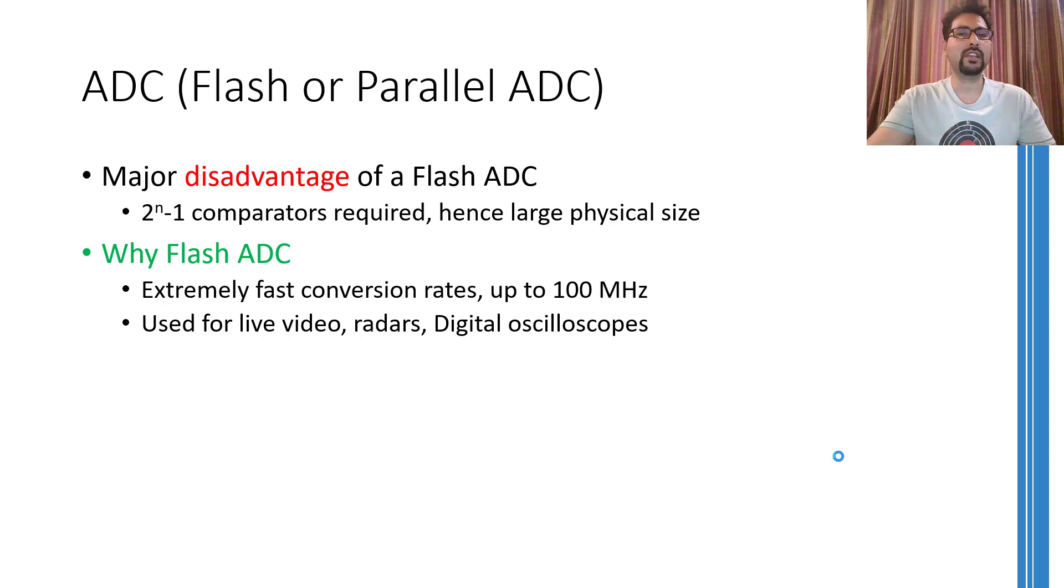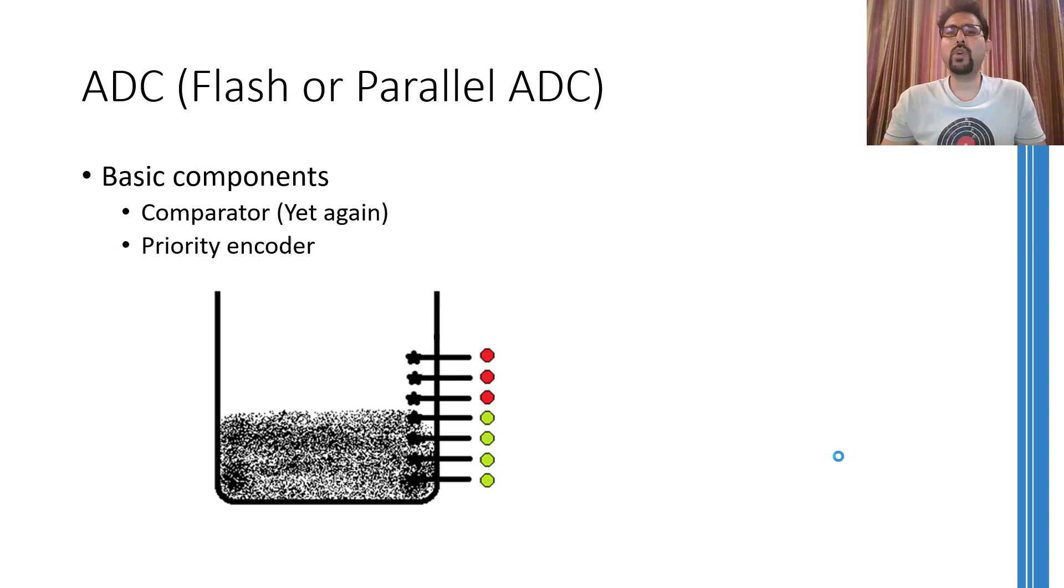So any situation where you can't wait for conversion to complete using a small number of comparators, you need a flash ADC implementing a large number of comparators that will give you the result in a single clock pulse.